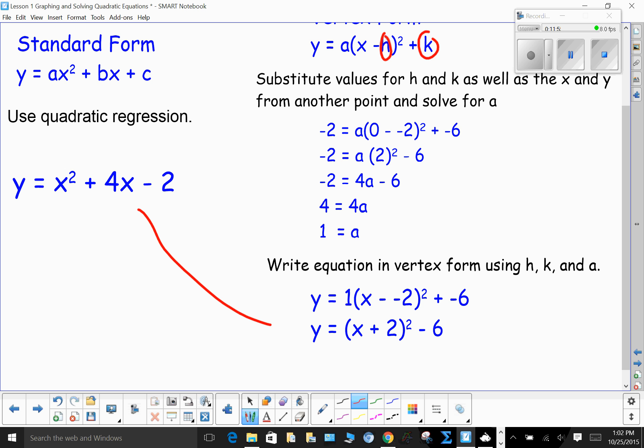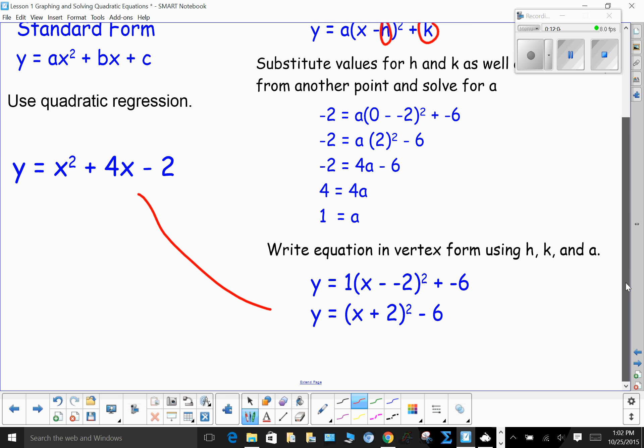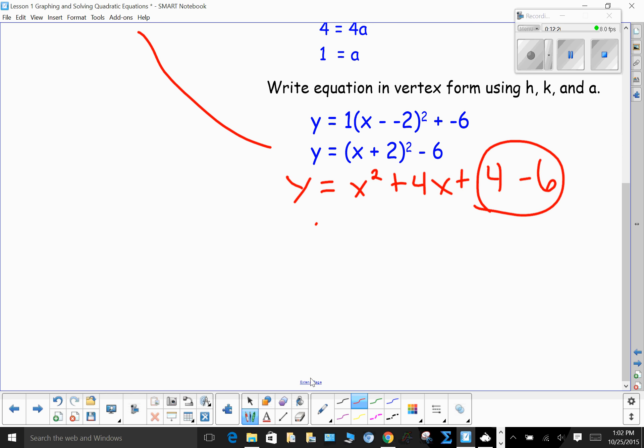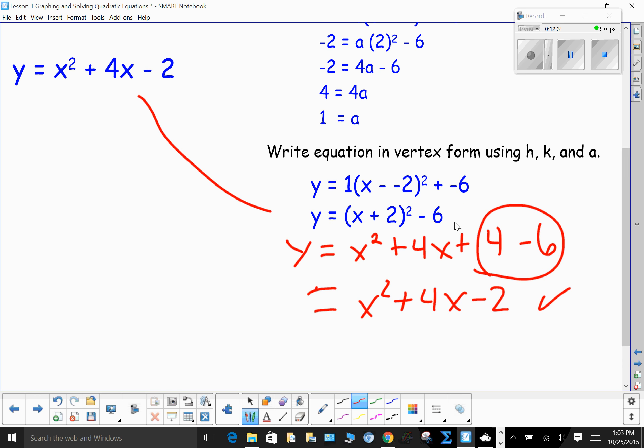These two equations are equivalent equations. Now, I could just as easily have gotten the vertex form, then foiled this one. To get the vertex form, I didn't have to use quadratic regression. I could get that y = x² + 4x + 4 - 6. Combining these two. This gives me x² + 4x - 2. Which is the same thing. So, if you forget how to do the calculator, you can always expand your vertex form.